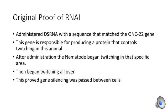The original proof of RNAi was administered using dsRNA with a sequence that matched the ONC22 gene. This gene is responsible for producing a protein that controls twitching in this animal. After administration, the nematode began twitching in that specific area, then began twitching all over. This proved that gene silencing was passed between cells.